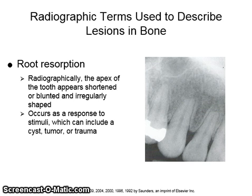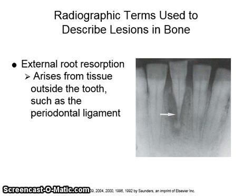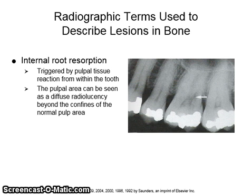Root resorption shows radiographically that the apex of the tooth appears shortened or blunted and irregularly shaped. This generally occurs as a response to stimuli, which can include a cyst, a tumor, or trauma. External root resorption is caused by tissue that is outside of the tooth, such as the periodontal ligament. These types of lesions are pathological and usually the tooth needs to be extracted. Internal root resorption is triggered by pulpal tissue within the tooth. In this radiograph, the pulpal area can be seen as a diffuse radiolucency beyond the confines of the normal pulp area. These lesions are also pathological but may be treated by root canal therapy, which removes the pulpal tissue from the tooth.